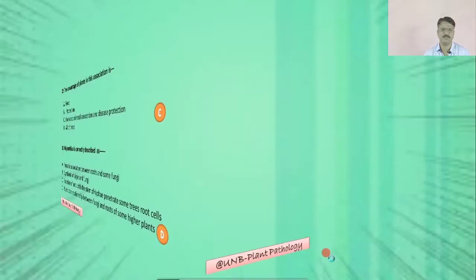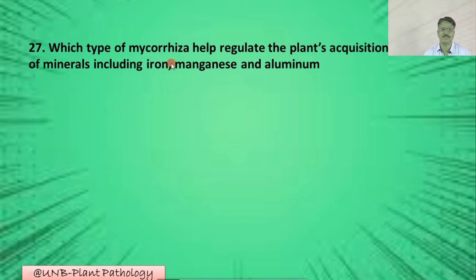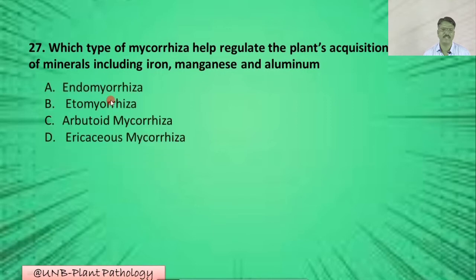Question number twenty-seven: Which type of mycorrhizae helps regulate the plant's acquisition of metals including iron, manganese, and aluminum? A: endomycorrhizae; B: ectomycorrhizae; C: arbuscular mycorrhizae; D: ericoid mycorrhizae. The correct option is D: ericoid mycorrhizae.